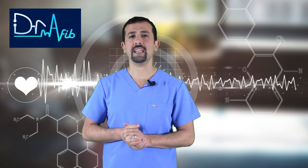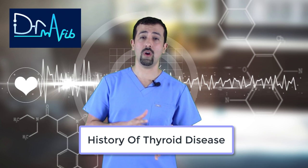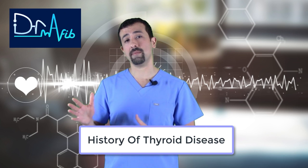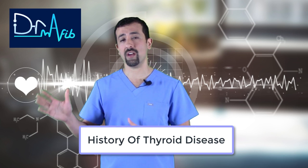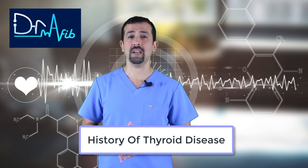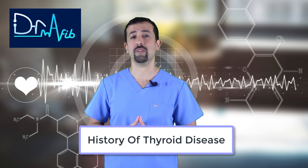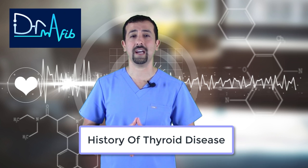Another thing that can lead to atrial fibrillation is a history of thyroid disease. People who have either low or, more commonly, hyperthyroidism — especially if untreated for a prolonged period of time — put extra strain on the heart from those thyroid hormones, which can lead to episodes of atrial fibrillation.